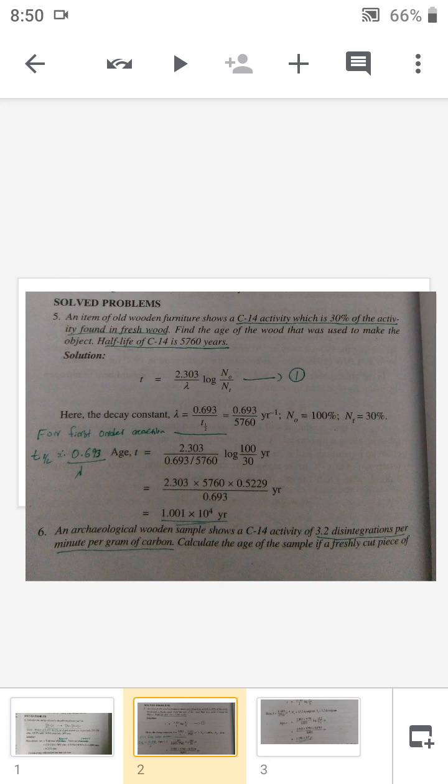In the given question, it is given that 30% of the activity is shown by the archaeological sample, so N₀ is taken as 100 and Nₜ is taken as 30.